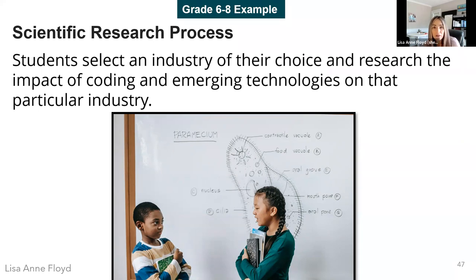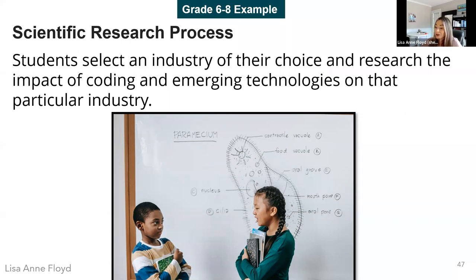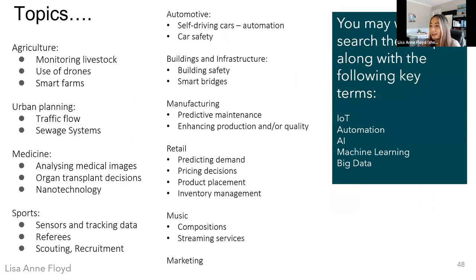Students can select an industry of their choice, or you might have them focus on a strand in the grade you're teaching. They're focusing on the impact of coding and emerging technologies on that particular industry. Students might come up with interesting stories based on personal experience — maybe they live on farms using such technology or have family members working in industries using emerging tech.